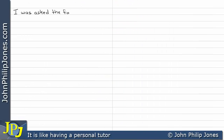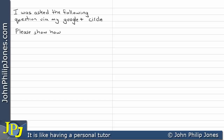I was asked the following question via my Google Plus circle: please show how an exclusive OR gate can be made from AND, OR, and NOT gates.